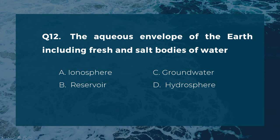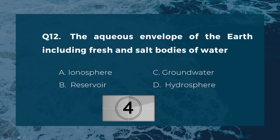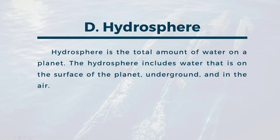Question twelve: the aqueous envelope of the earth, including fresh and salt bodies of water. A) ionosphere, B) reservoir, C) groundwater, D) hydrosphere. The correct answer is D, hydrosphere. The hydrosphere is the total amount of water on a planet, including water that is on the surface of the planet, underground, and in the air.